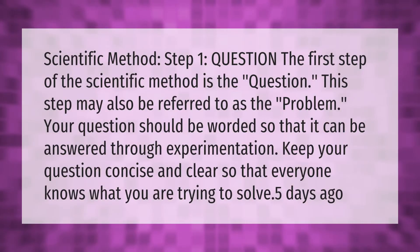Scientific Method Step 1: Question. The first step of the scientific method is the question. This step may also be referred to as the problem. Your question should be worded so that it can be answered through experimentation. Keep your question concise and clear so that everyone knows what you are trying to solve.